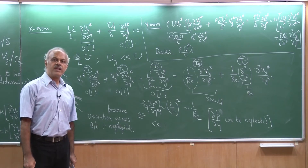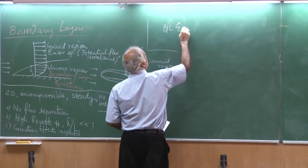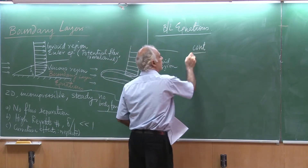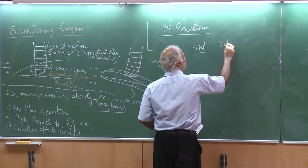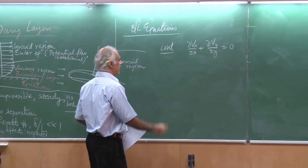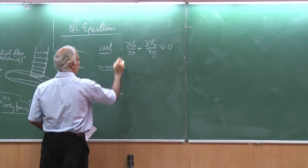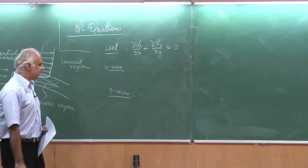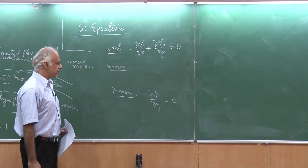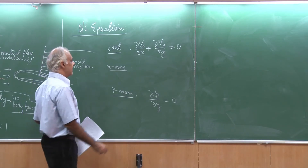Let me therefore write down the boundary layer equations after this analysis. The first is the continuity equation - there is no change to that, it remains as is. I get del Vx by del x plus del Vy by del y equal to 0. Then I have the x momentum equation and the y momentum equation. The y momentum equation tells us that del P by del y is 0 inside the boundary layer, which really implies that P is only a function of x. So I can replace del P by del x with dP by dx.